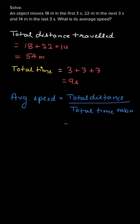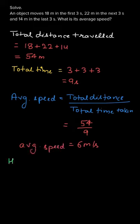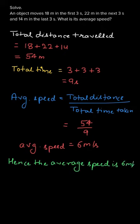So we will find the average speed. The total distance was 54 meters and the total time was nine seconds, so 54 divided by nine is basically six meters per second. Hence our answer is: the average speed is six meters per second. Thank you.